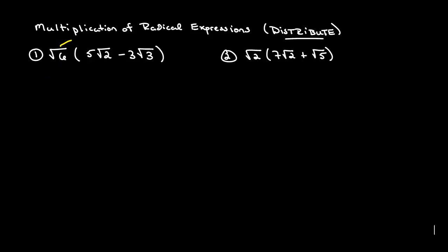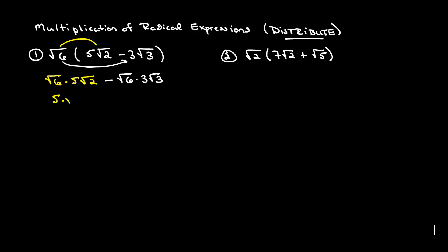The square root of 6 times 5 square root of 2 is the square root of 6 times 5 times the square root of 2. And now because we have subtraction between, we'll put a minus sign. And that's the square root of 6 now distributed in times 3 square root of 3. Multiplication is commutative so we can change the order around. So this is 5 times the square root of 6 times the square root of 2 minus 3 times the square root of 6 times the square root of 3.